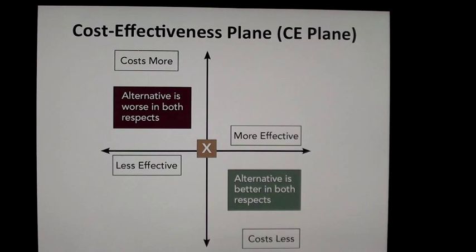In the north-west quadrant, we have the situation where something is less effective but costs more than the next best alternative or the standard of care. In that case, if it costs more and it's worse, we should not take that new option into practice. That's an easy decision rule — we actually reject those types of options in healthcare.